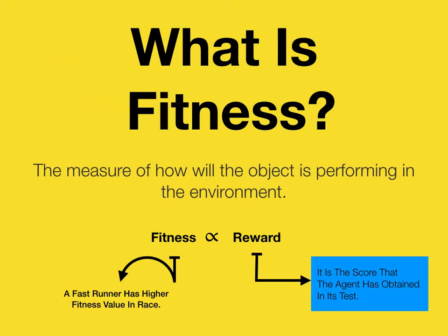Fitness is the measure of how well an object is performing in its environment. Fitness is proportional to reward — for example, if you're playing tic-tac-toe and you win three games, your score is three. The higher the score, the better the player. Fitness is proportional to but not exactly equal to the reward, as some parameters may change it. So a fast runner has a higher fitness value in a sprint or racing context.